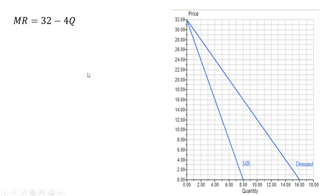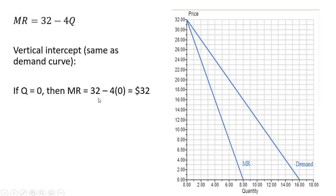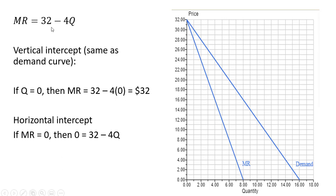To get the marginal revenue curve, the vertical intercept is the same as the demand curve — marginal revenue equals 32 when Q is 0. Setting marginal revenue equal to 0: 0 equals 32 minus 4Q, solving gives Q equals 8. So marginal revenue touches the horizontal axis at 8, while the demand curve touches it at 16. Marginal revenue intersects the quantity axis halfway between the origin and where the demand curve intersects.